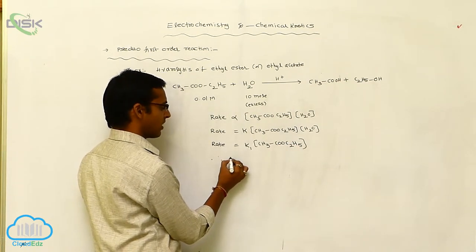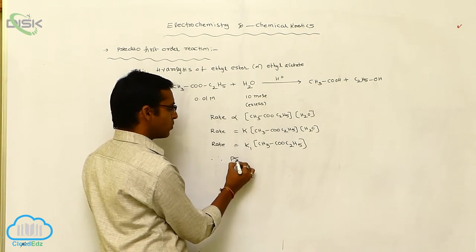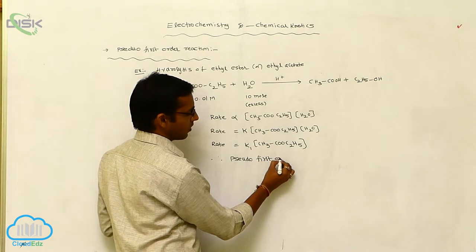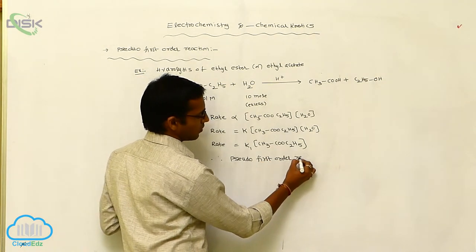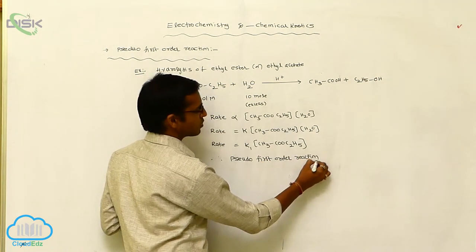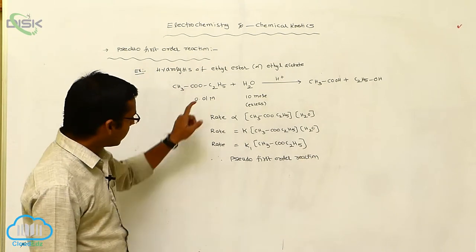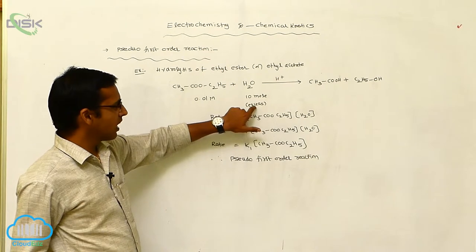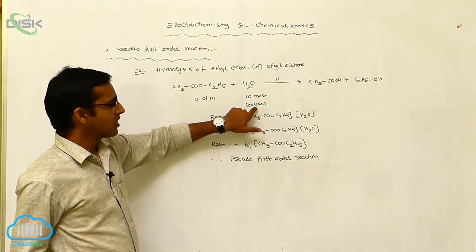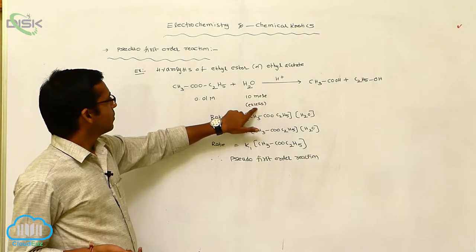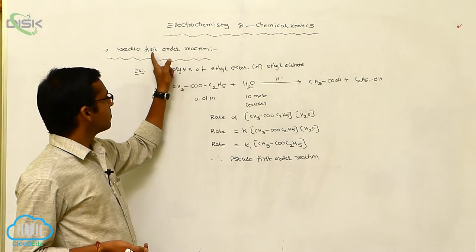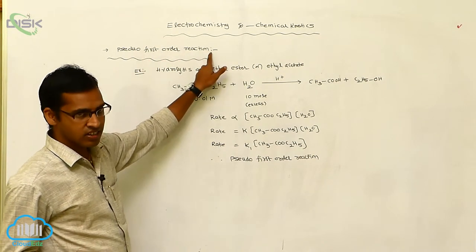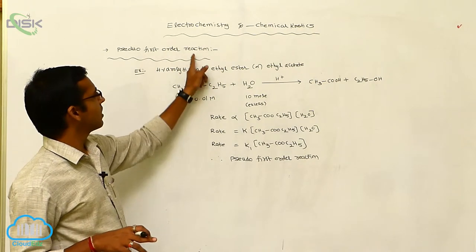This is your first order reaction — that is your pseudo first order reaction. Two reactants are present; one of the reactants is in excess amount, so its concentration remains effectively constant. The rate of reaction depends on only one term, so it appears as a first order reaction. That is pseudo first order reaction.